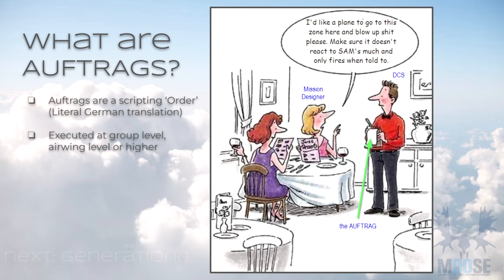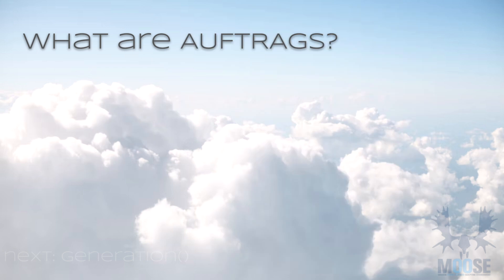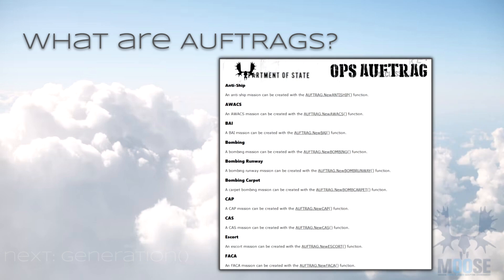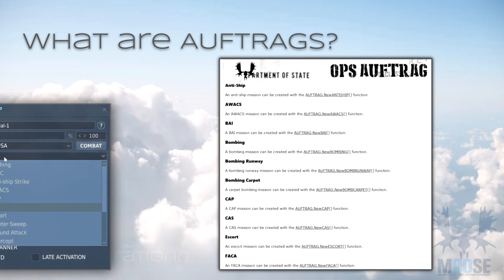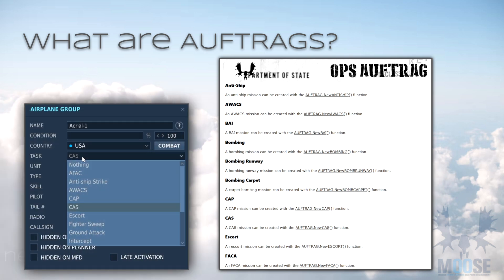Auftrags are executed at the minimum of a DCS group level, but they can be executed at higher levels, and those are created by the ops groups that we'll talk about later. An Auftrag is equivalent to a DCS AI task. If you look at the documentation for Auftrag, you can see they are a list of different types of tasks. The easiest way to think of these is to compare them to the mission editor — you'll see there is a parity of sorts, though it's not a one-to-one parity, but it's a good way to start initially understanding them.